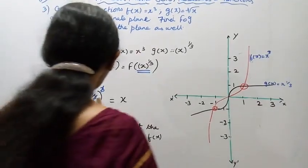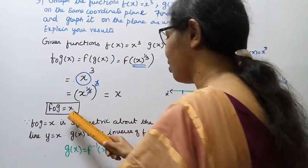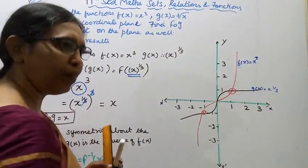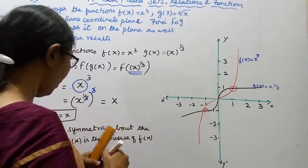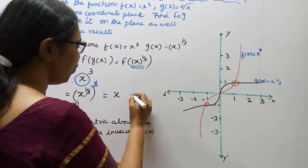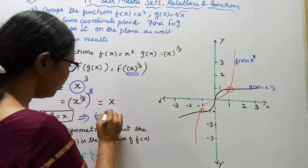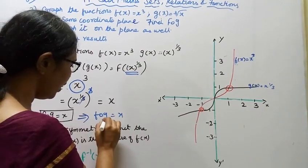Therefore, f∘g = x. Now graph it on the plane. f∘g = x, this is y = x.